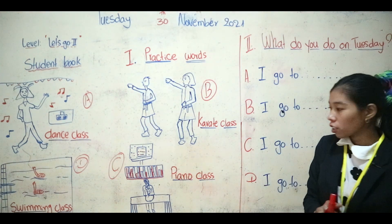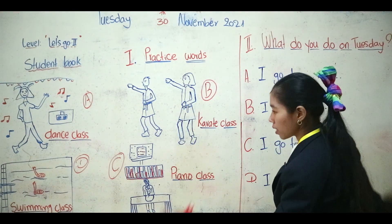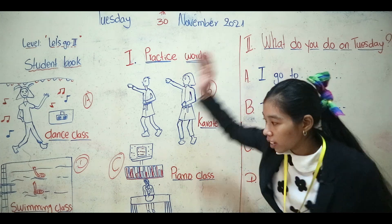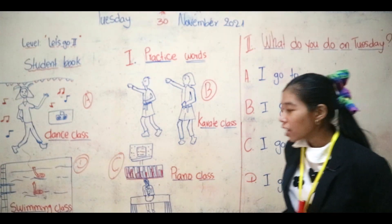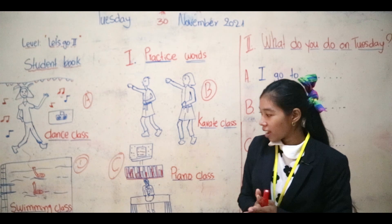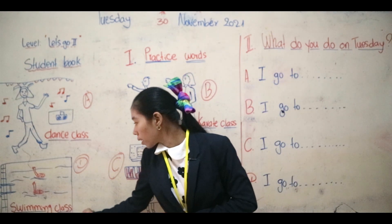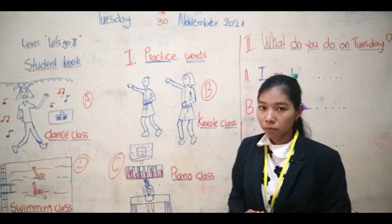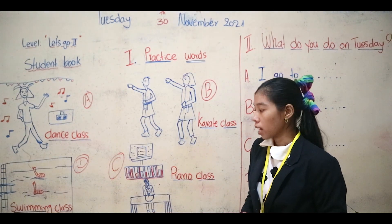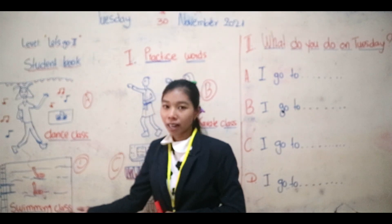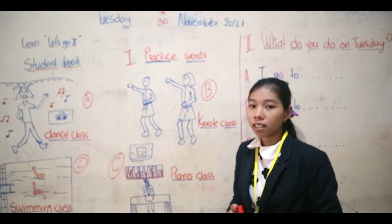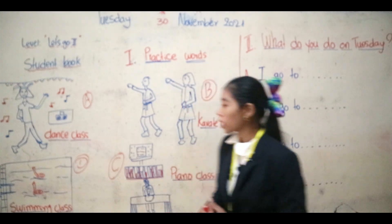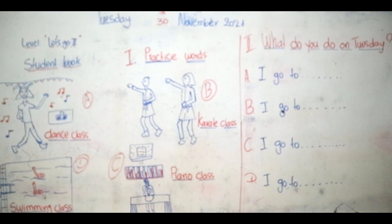Next, this is the last one. You see water and a pool, so can you guess? Swimming class! Great job — swimming class. We can spell it: S-W-I-M-M-I-N-G, swimming, and C-L-A-S-S, class — swimming class! In Khmer we call it that too. Great job!